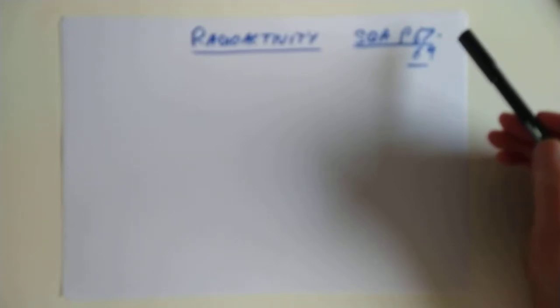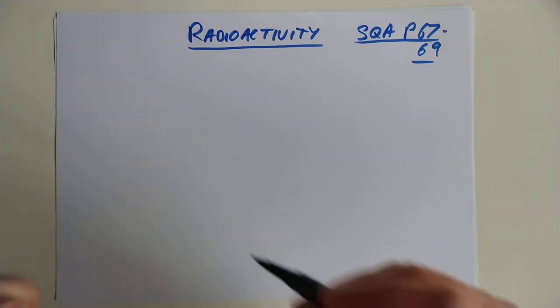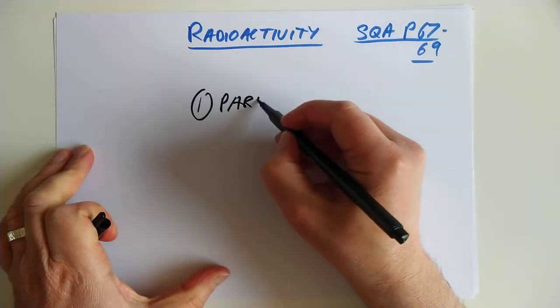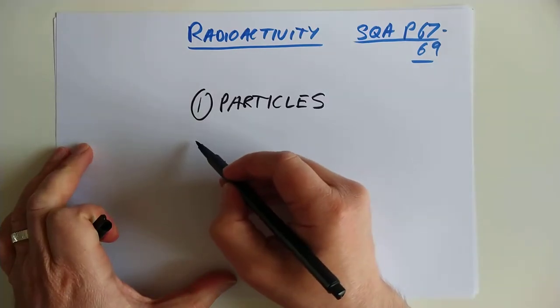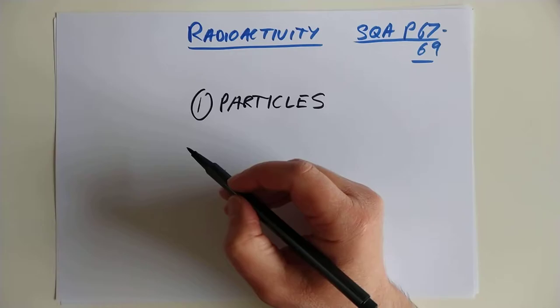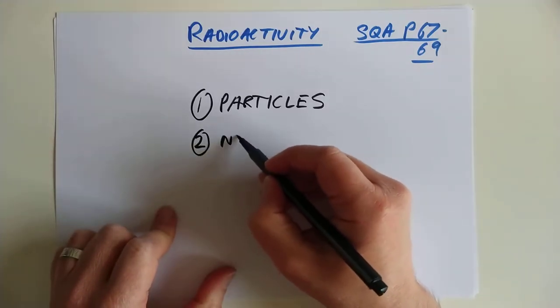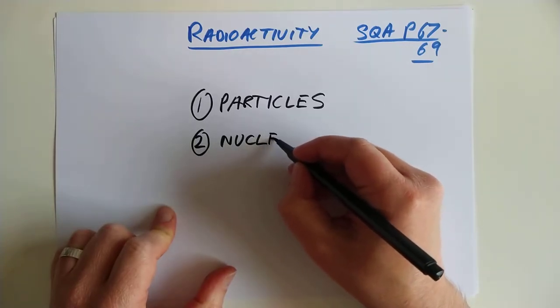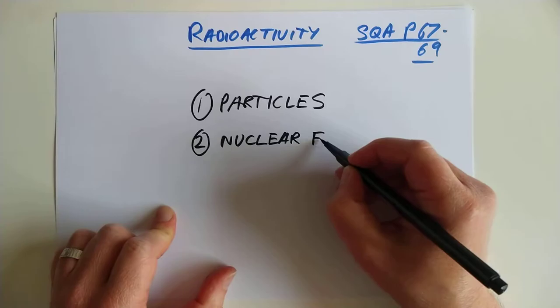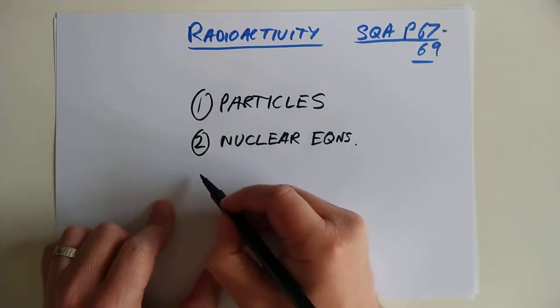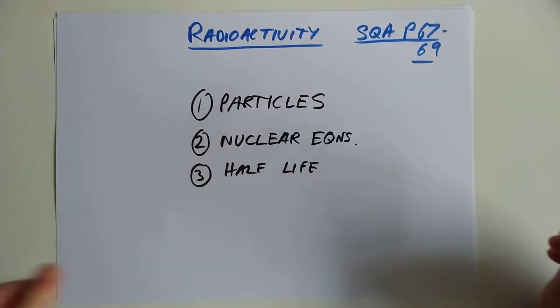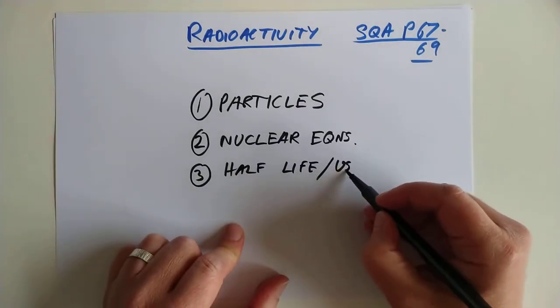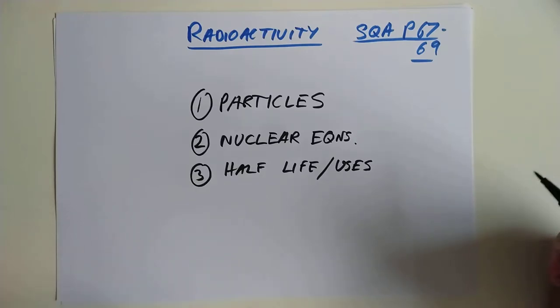Let's have a look at radioactivity and what the SQA wants you to know. The pages 67 through to 69. First of all, they want you to know about the three types of particle. So we'll have a look at the particles involved, what they do, what they're made of, how you stop them and how you write them. Secondly, we'll have a look at nuclear equations. And lastly we'll have a look at the concept of half-life, which is ever so handy. Also, uses of radiation.